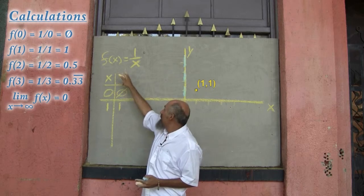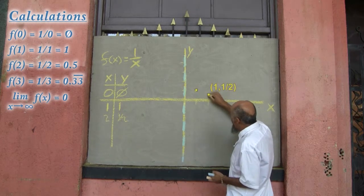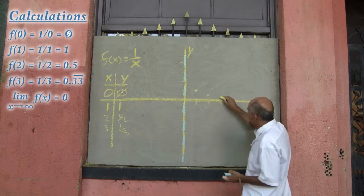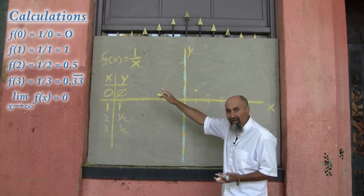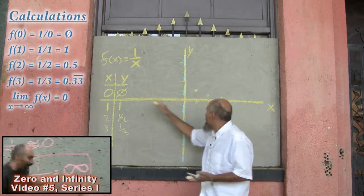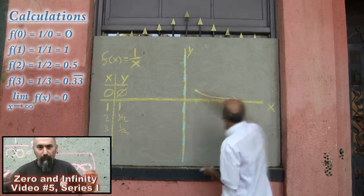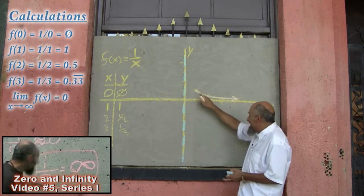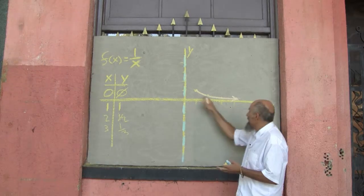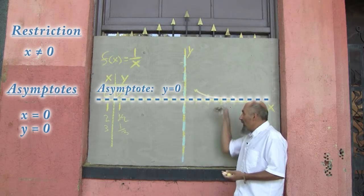When x is 2, f(2) or y becomes one-half. When x is 3, y becomes one-third. If you continuously increase x, exactly as we discussed in the first video, the function is slowly going to approach 0. So as x increases, this line approaches y = 0, which is our horizontal asymptote.